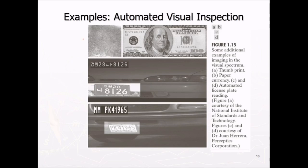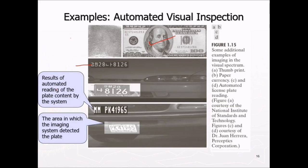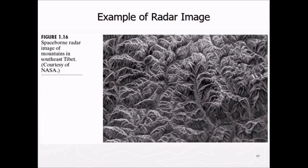Let us have some more examples. This is a thumb print. This is a paper currency. This is automated license plate reading. These are the results of automated reading of the plate contained by this system. And this area in which the imaging system detected the plate. Even if it is not very clear, the image processing can be helpful for you.